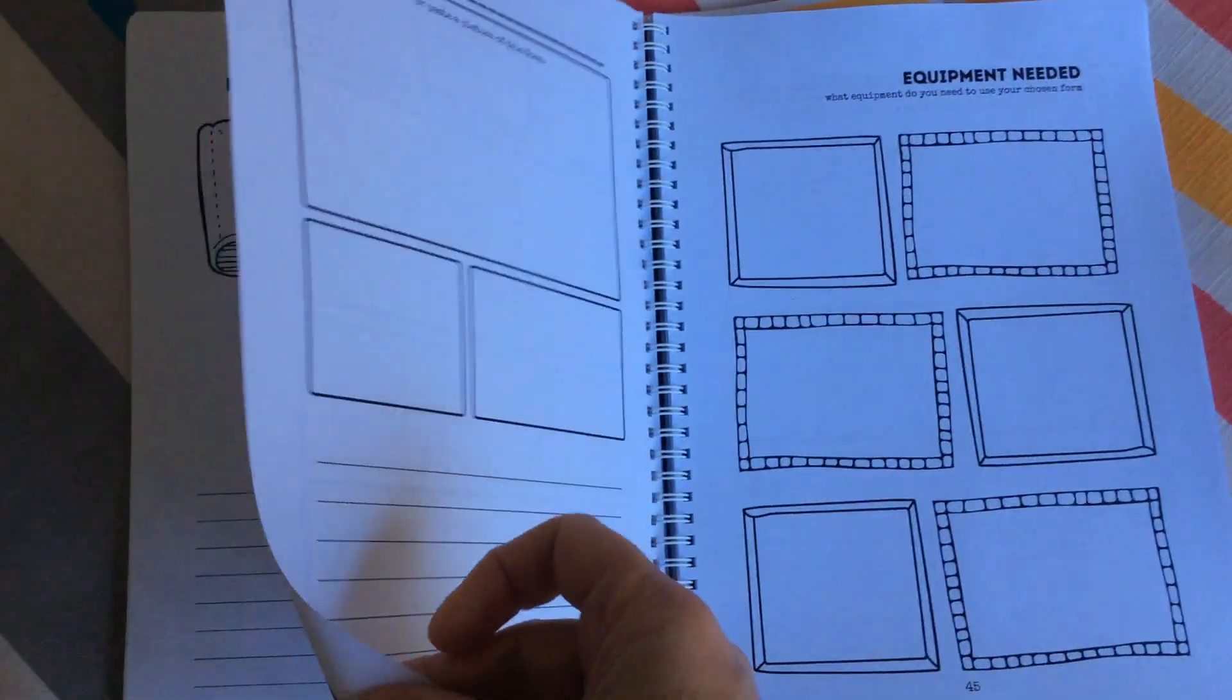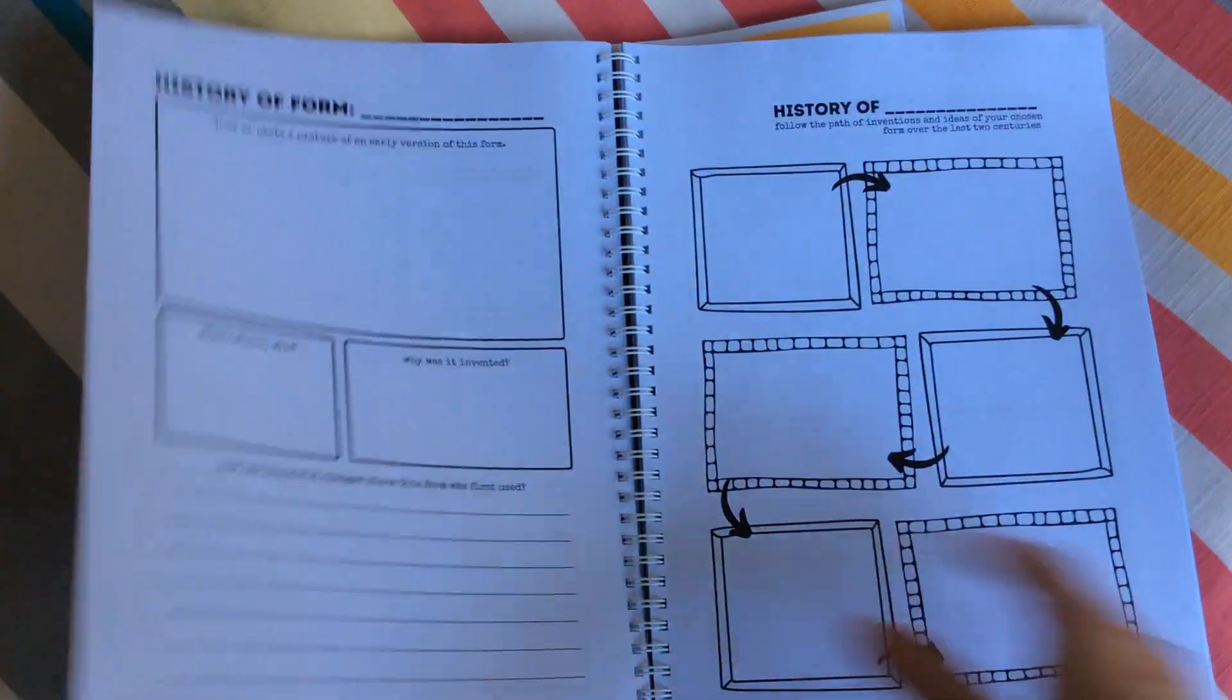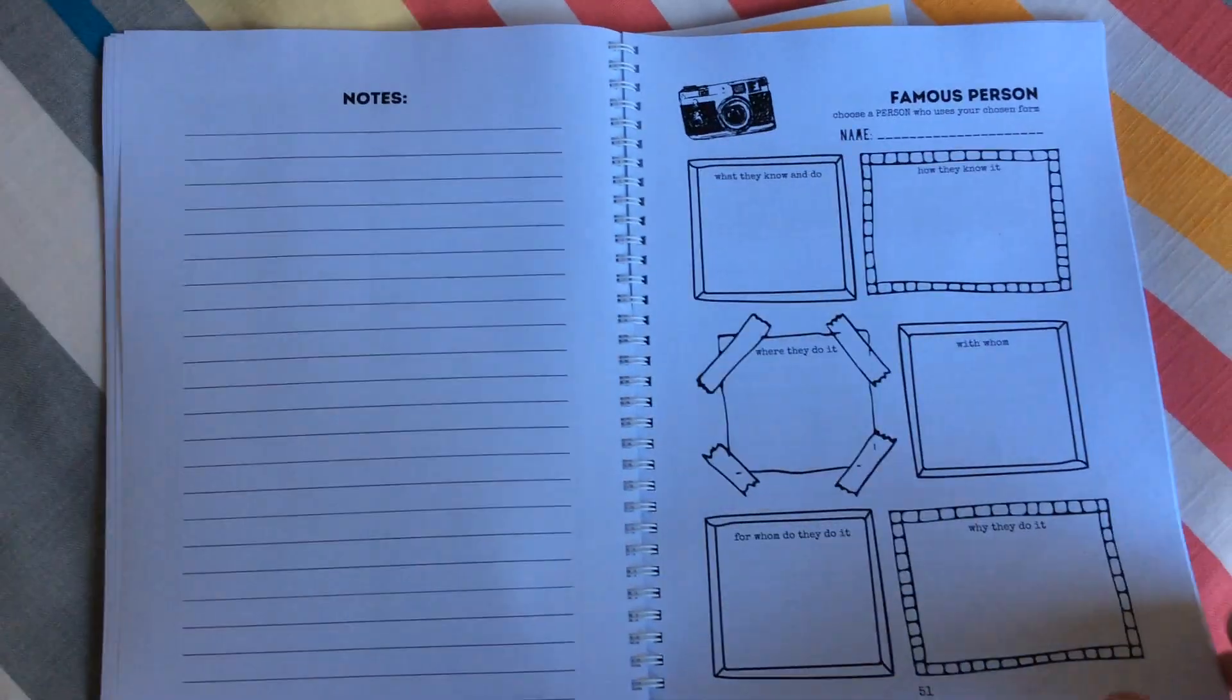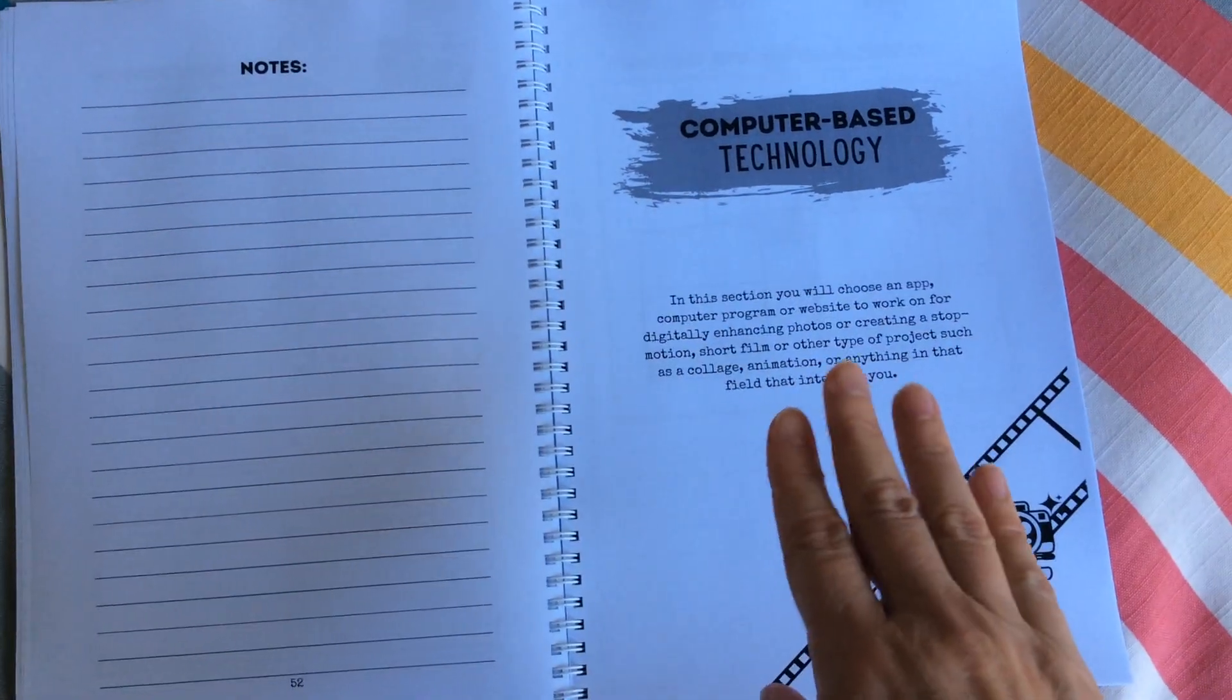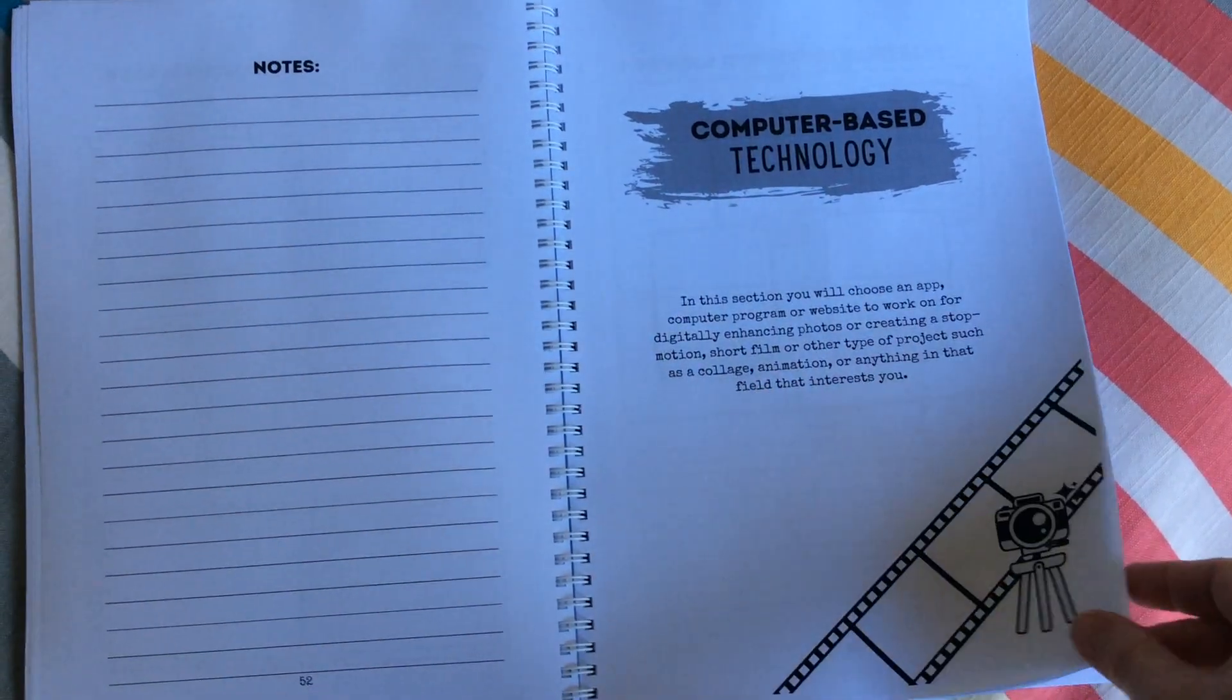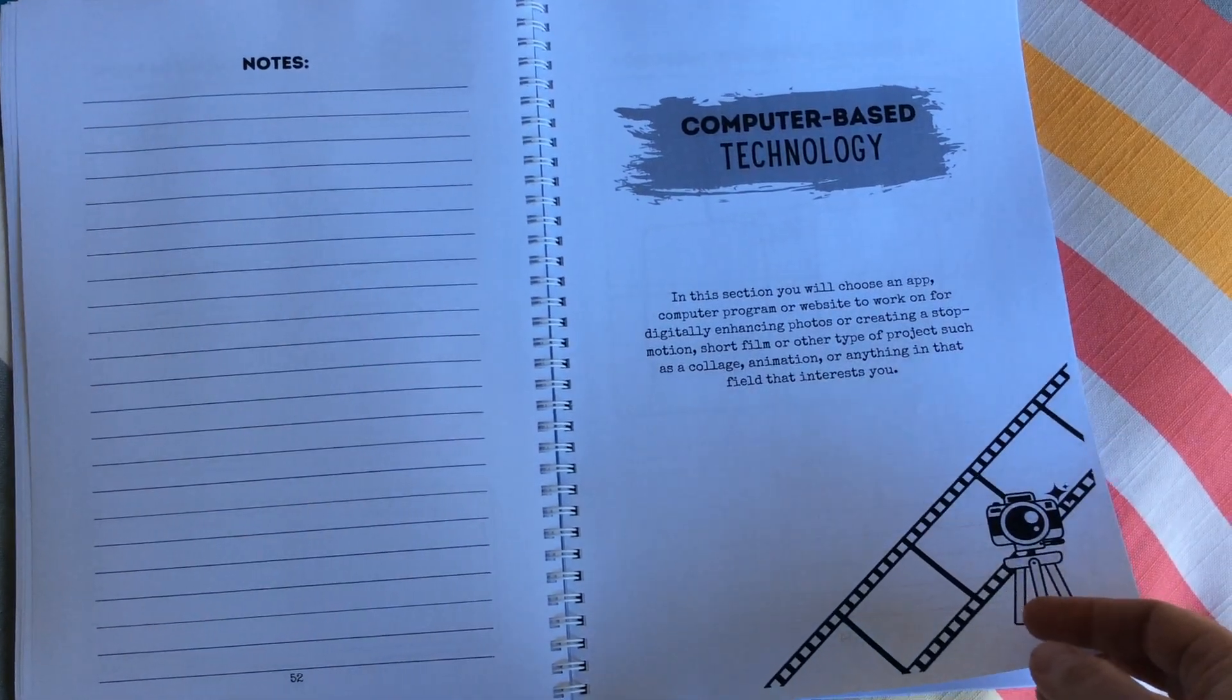So any of those three forms a child can look at much deeper. So do that as a project. And then computer based technology also needs to be covered. So any app or computer program or website where a photo or a short film or anything has to be digitally done.